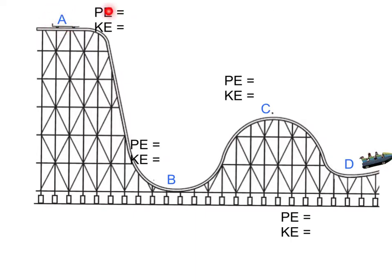At any part of the ride, it could have potential energy or kinetic energy, or both. So at points A, B, C, and D, we have to determine whether the roller coaster has potential energy or kinetic energy or both. At point A, since it has a great height, it has potential energy. And since it's not moving, it has a kinetic energy of zero.